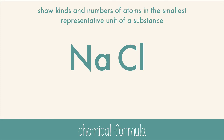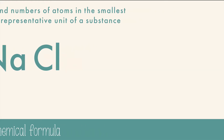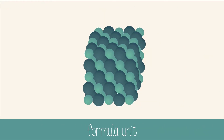This is a nice simple representation, but it's not exactly the truth. Ionic compounds exist as a collection of positively and negatively charged ions arranged in repeating patterns. So to talk about the lowest whole number ratio of ions, we say formula unit instead of a word like molecule.